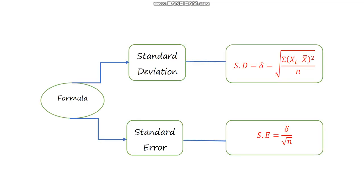Here are the mathematical formulas. Standard deviation sigma equals the square root of the summation of (x_i minus x-bar) squared over n. First we find the mean, then each observation minus its mean is squared, summed, and divided by the number of observations. Standard error equals the standard deviation divided by the square root of the number of observations. Thanks.